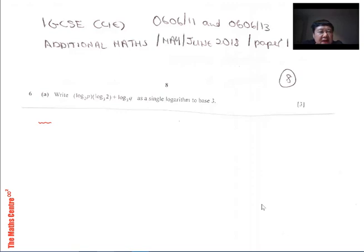Now this is taken from question number 6 in the most recent summer exam and this carries three marks. Okay, let's take a look. It says write log P to base 2 times log 2 to base 3 plus log Q to base 3 as a single log to base 3.